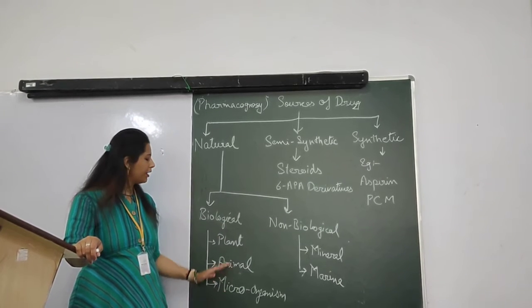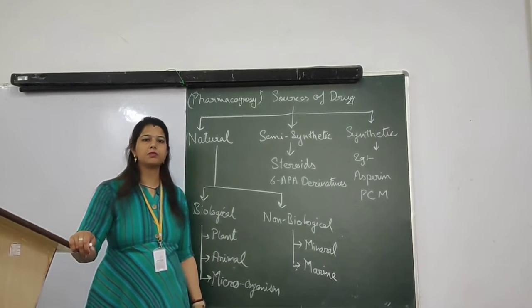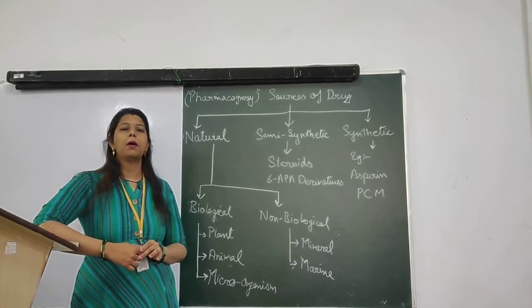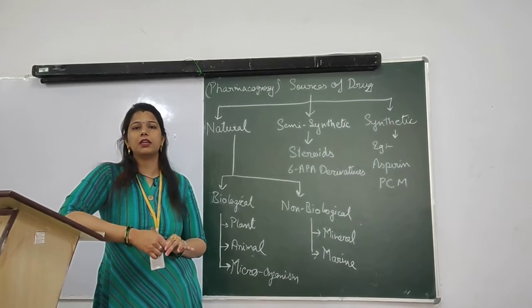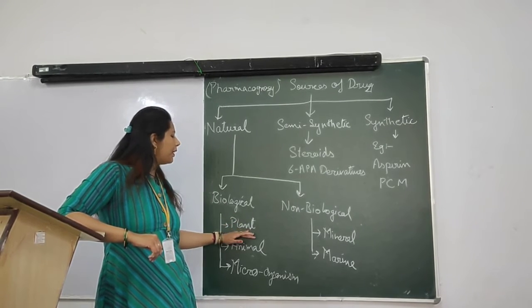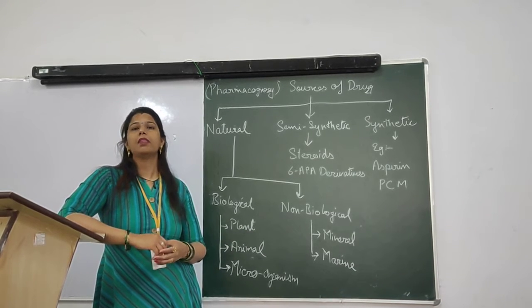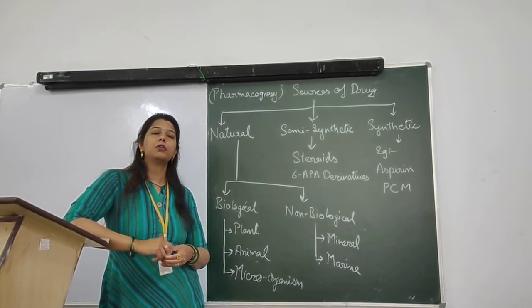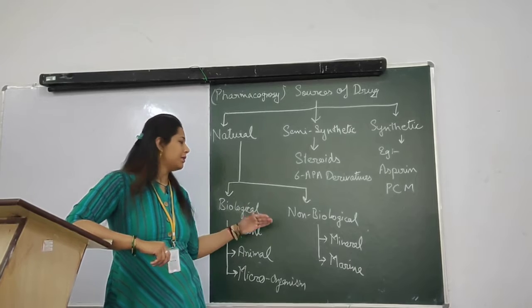Biological sources are further divided into plants, animals, and microorganisms. In our nature, since ancient times, plants have been used as medicine in Ayurveda, Unani, and Siddha systems of medicine. Plants are spread across around 300 families, and we have 2 to 3 lakh medicinal plants which were used in ancient times as medicines.